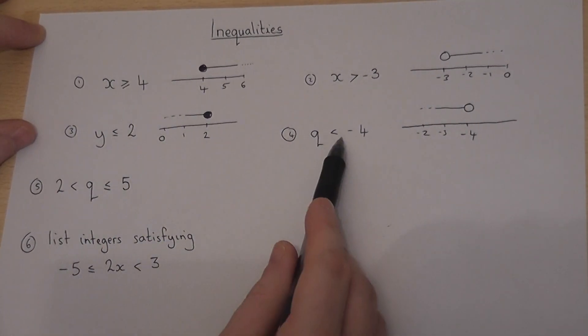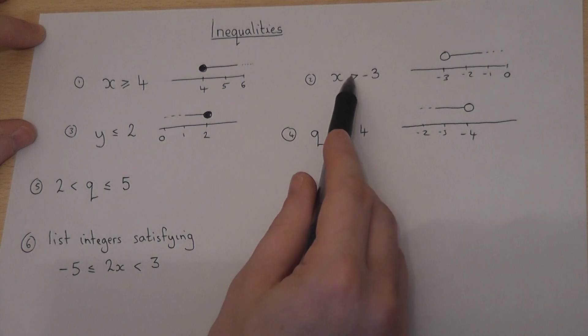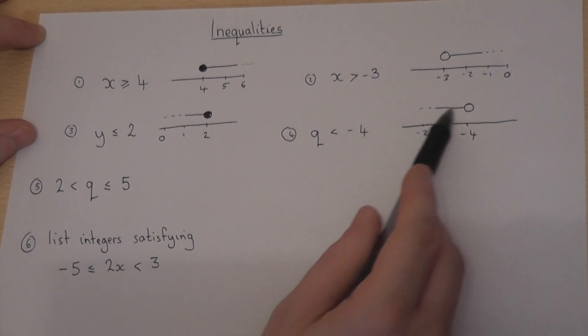Bigger than's, less than's, with the two strict inequalities where we don't include the actual numbers themselves.